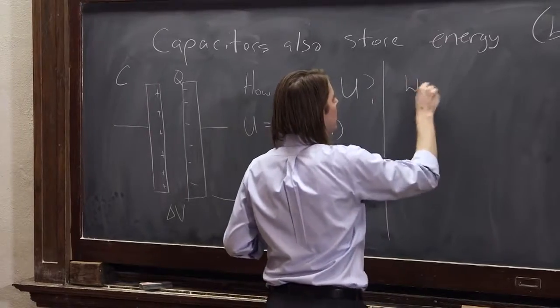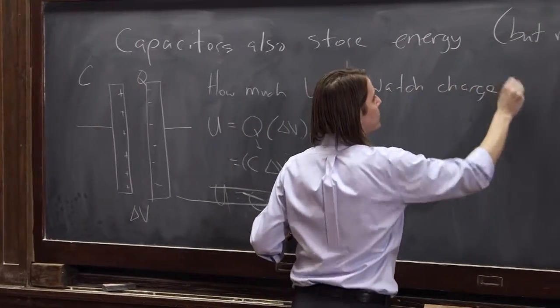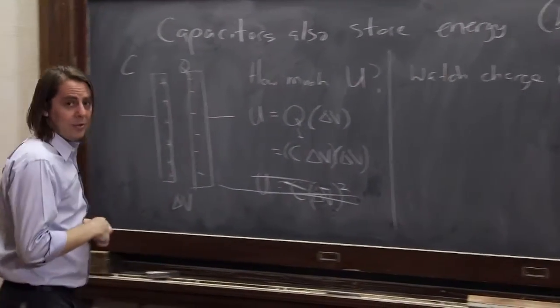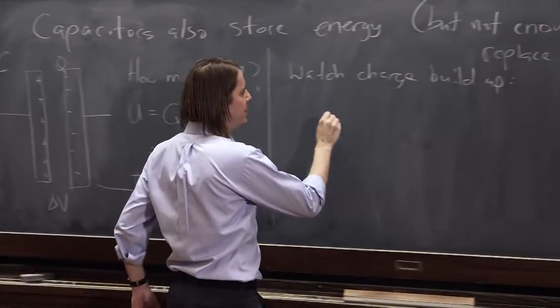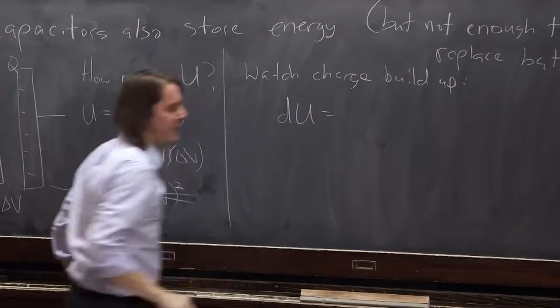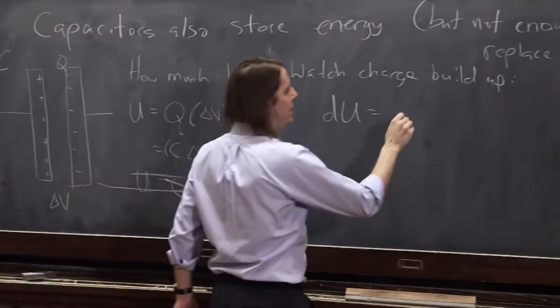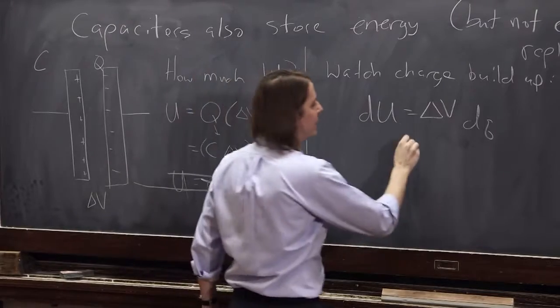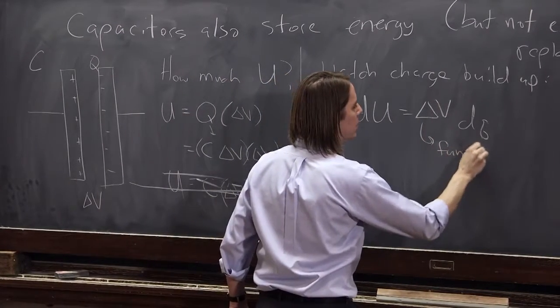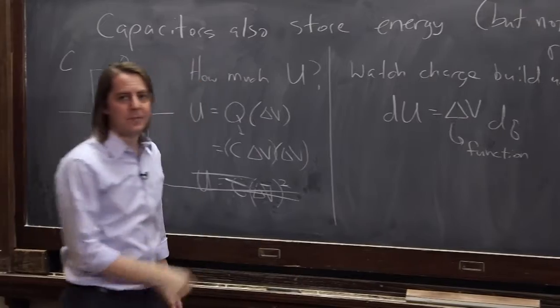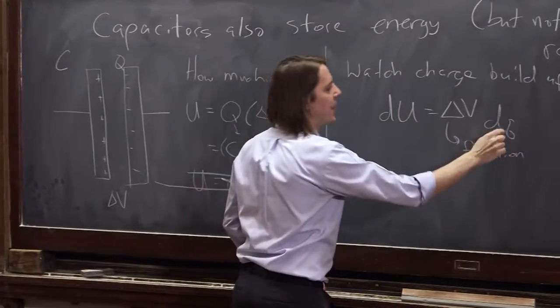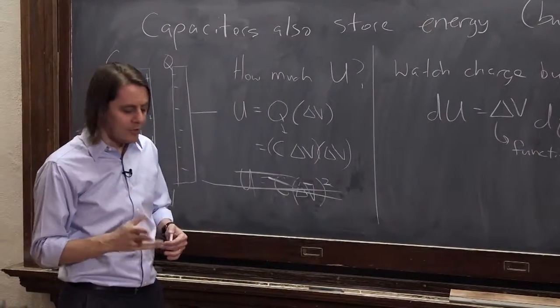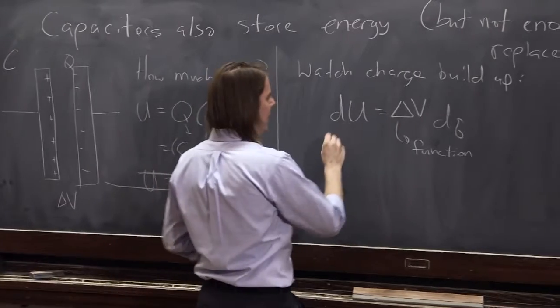So what you have to do to see it build up, let's watch the charge build up and think about it. So what we have to do is think about differentials. What little bit of charge dU do we get when we add a little dQ? Well, it depends on what delta V was at that time. So delta V here is a function. It's a function of how much charge is on the plate. So each charge you add will add some energy. How much? Whatever delta V is. If it's zero, it won't add any charge.